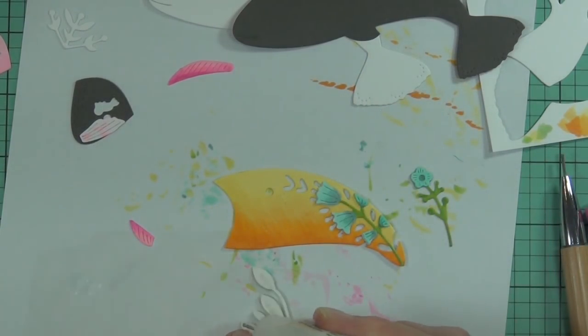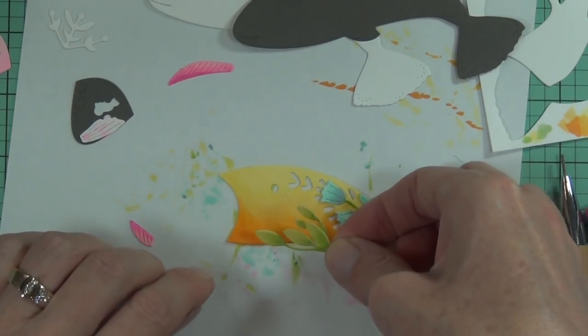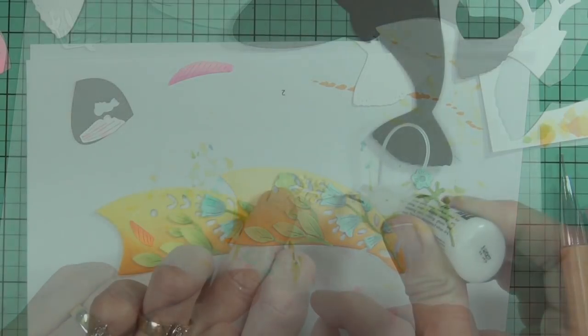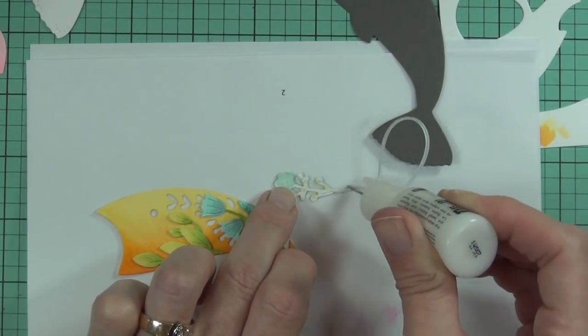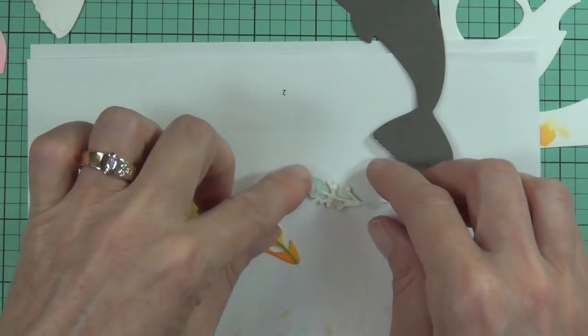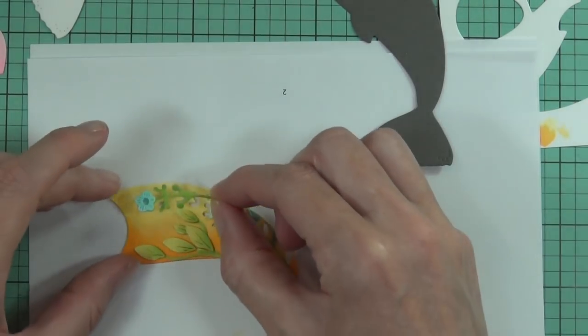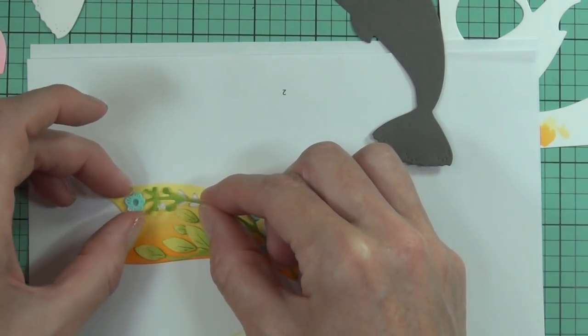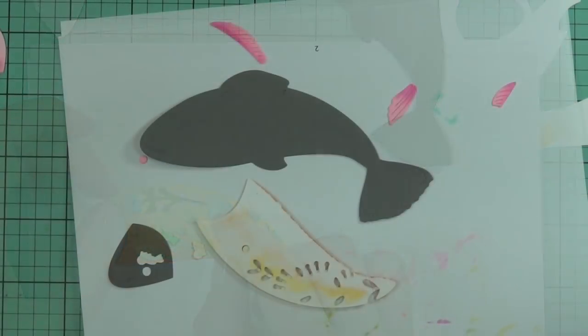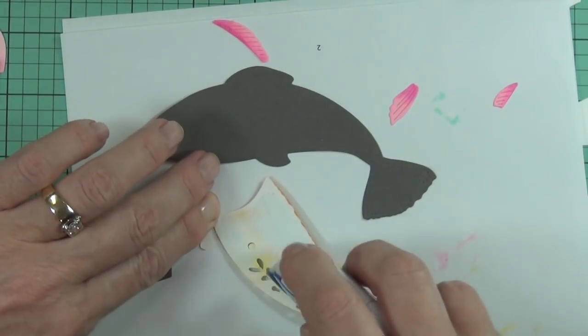Now I am using the matte medium here to adhere my pieces. You could use any liquid glues or you could even use a dry adhesive or use adhesive behind your die cuts before you cut them. But I just find that the liquid glue just gives you that little bit of time that you can actually move your image around before you commit. And the good thing with the matte finish on the glues is that if you do move it a little bit too far or the glue does squish out the sides, you won't see it when it dries. It dries matte, not shiny glue.